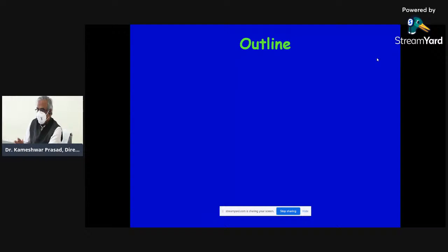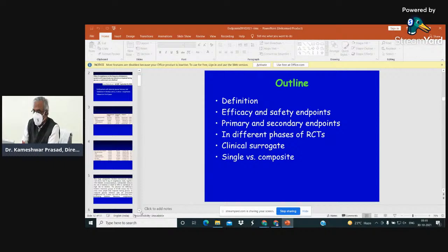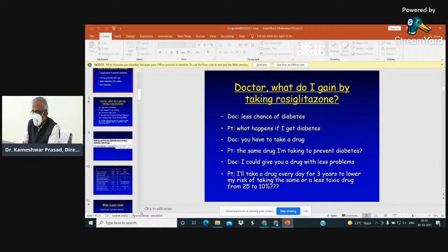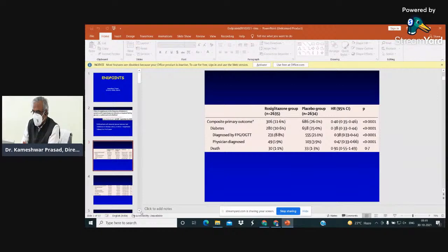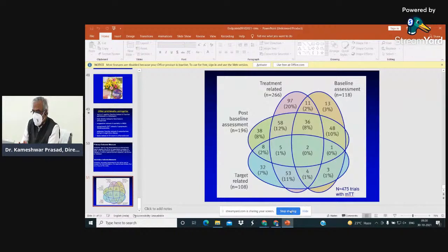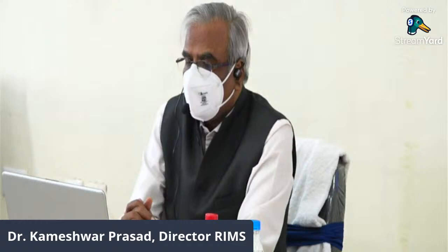Certain precautions have to be taken. Here is a published example: irbesartan versus enalapril. The study took a combined composite endpoint of all-cause mortality, progression to end-stage renal disease, and doubling of serum creatinine. There was a relative risk reduction of 20 percent with a 95 percent confidence interval ranging from 7.5 percent to 32 percent.